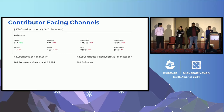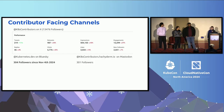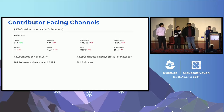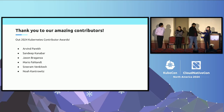For contributor-facing channels, we have K8s Contributors on X with over 13,500 followers, though we've seen a decline there as the community moves to Bluesky. We've also created a kubernetes.dev Bluesky account 11 days ago, which has 304 followers, and a Mastodon account with 301 followers.